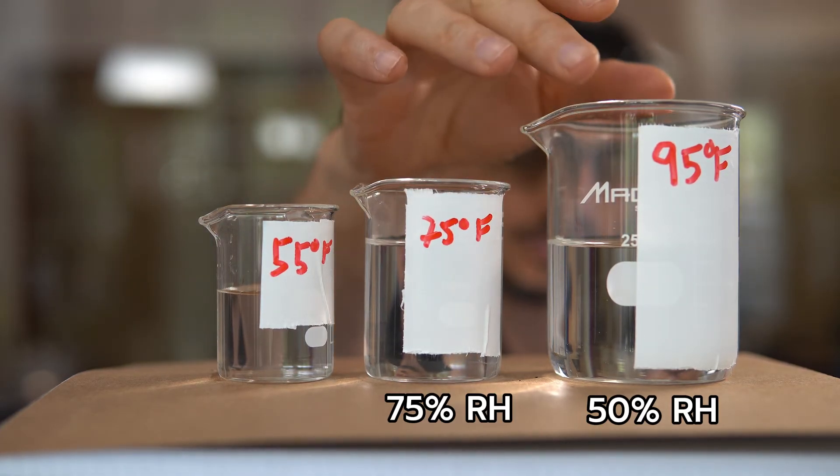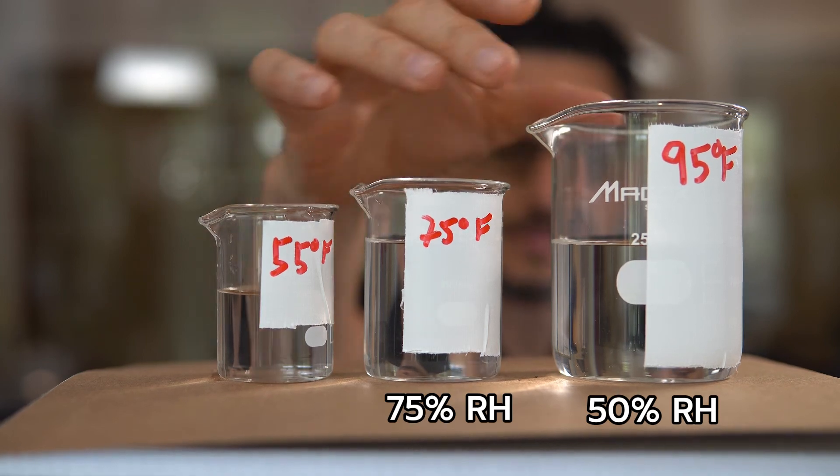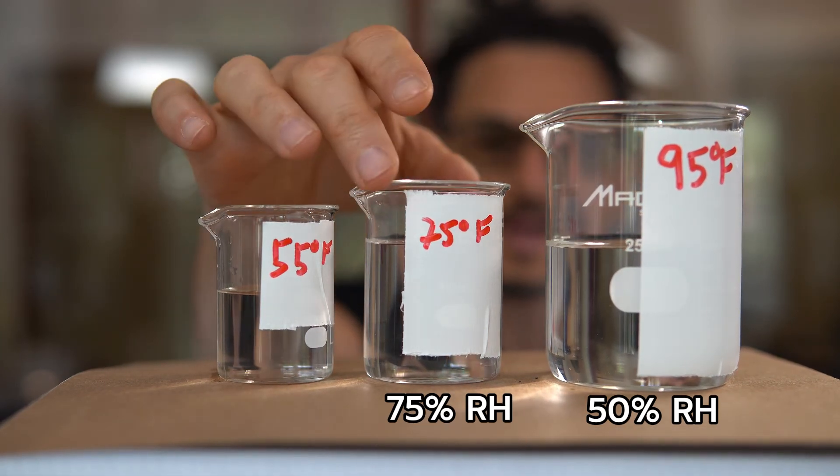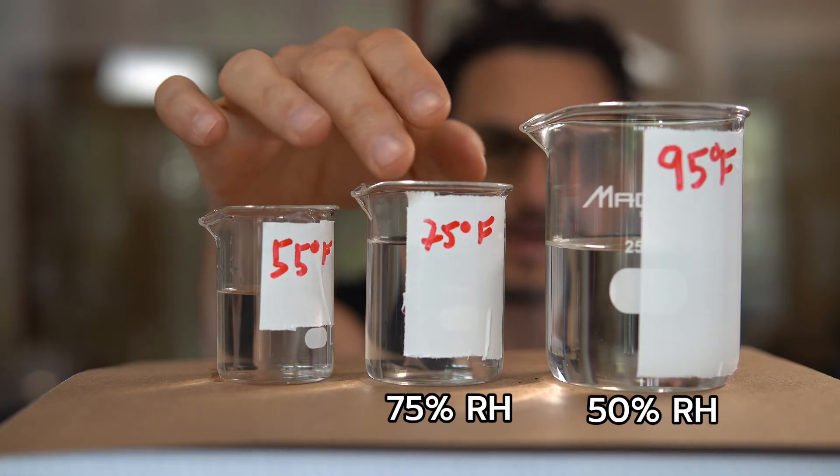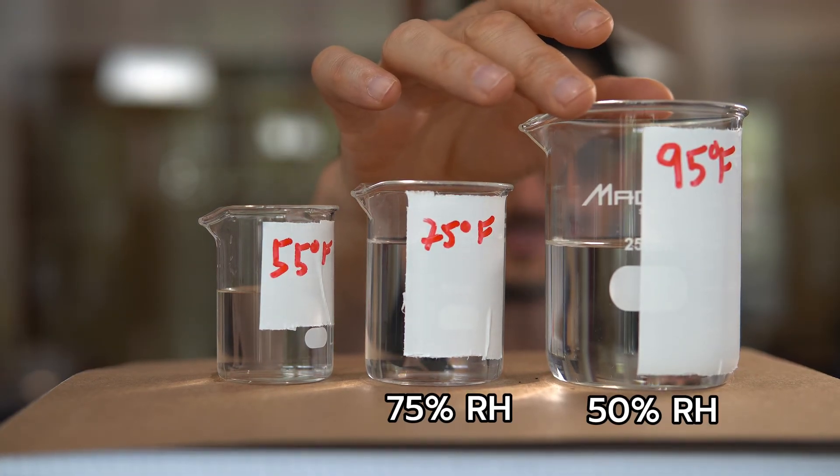Well, look, at 50% RH, there's still much more volume of water here than there is at 75, okay? So therein, again, lies the issue with using relative humidity. The RH is higher here, but there's actually more humidity in the air at this condition.